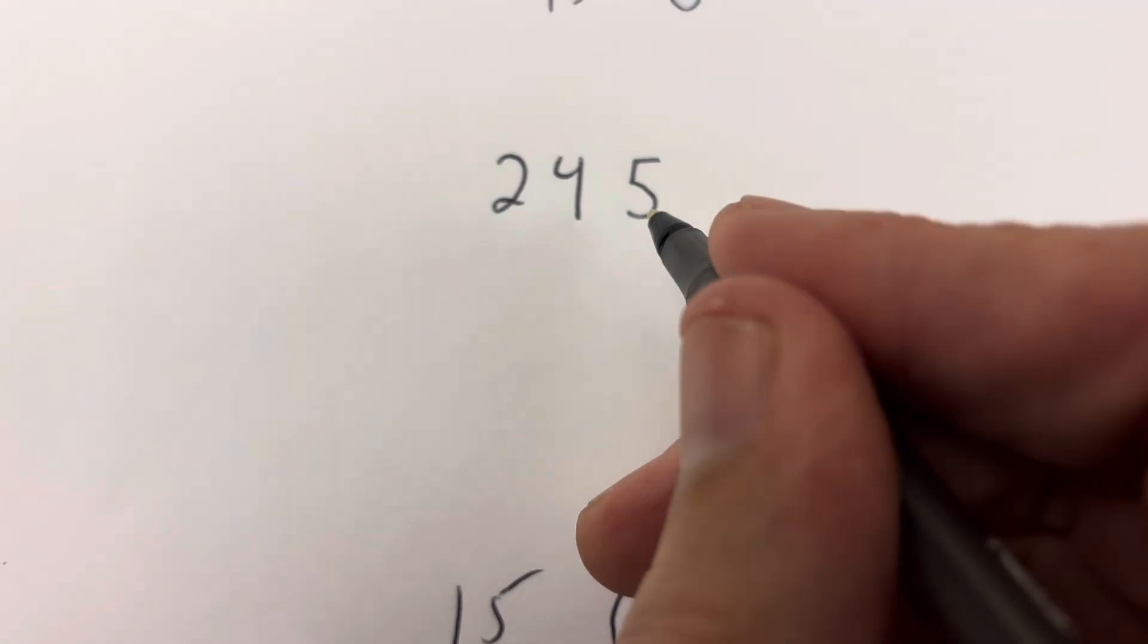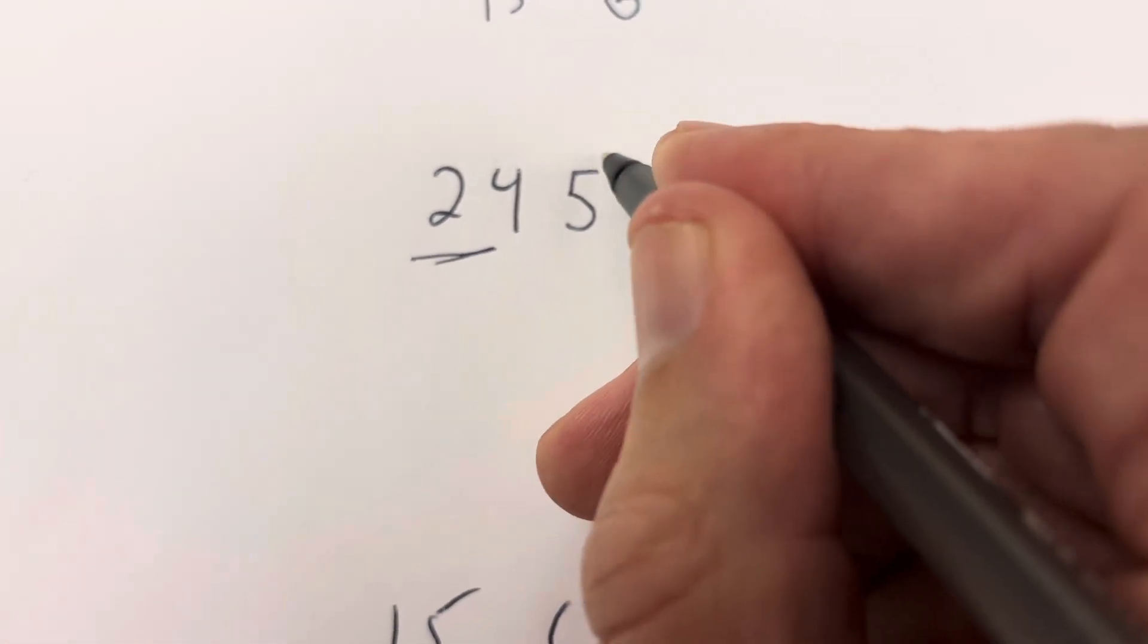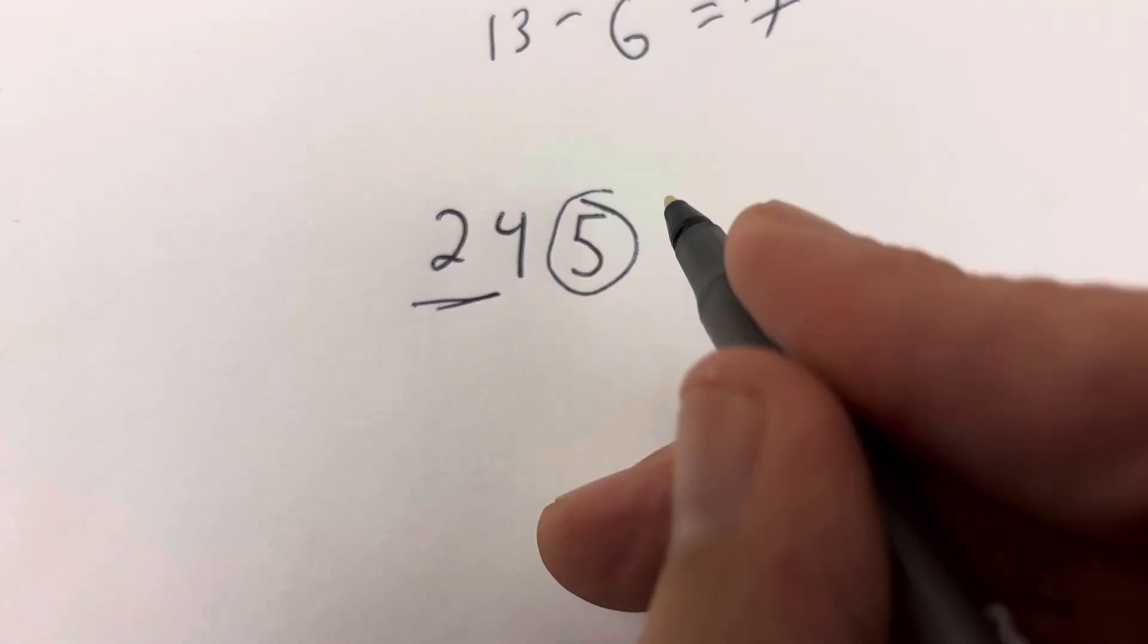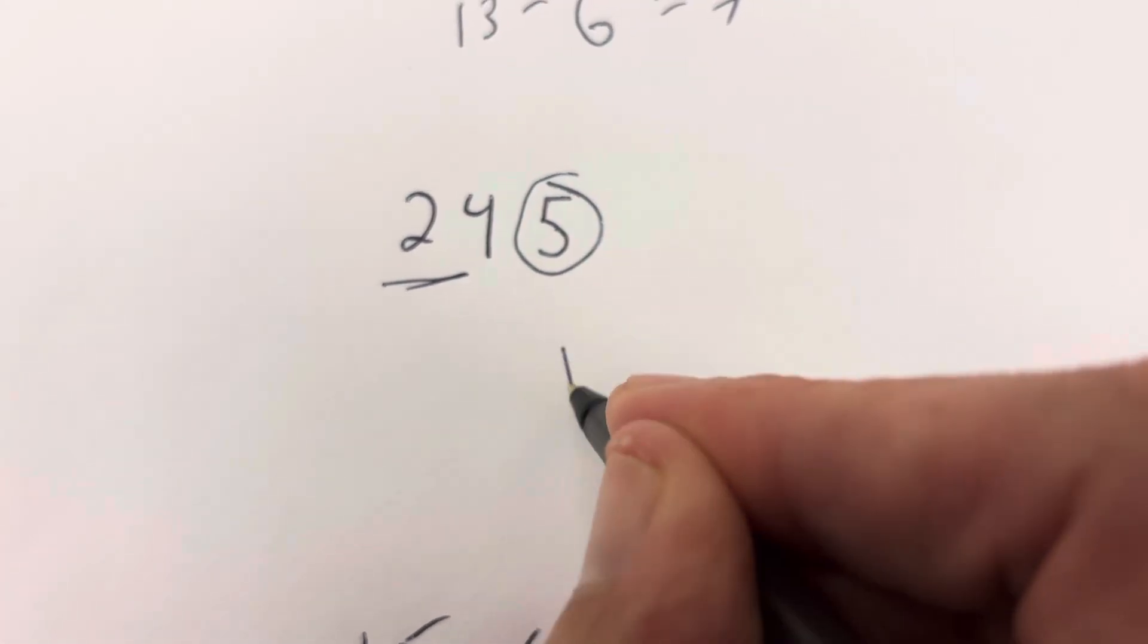Let's try it with 245. Again, you underline all the digits but the last digit. You circle the last digit. Double that digit, so that's 10.